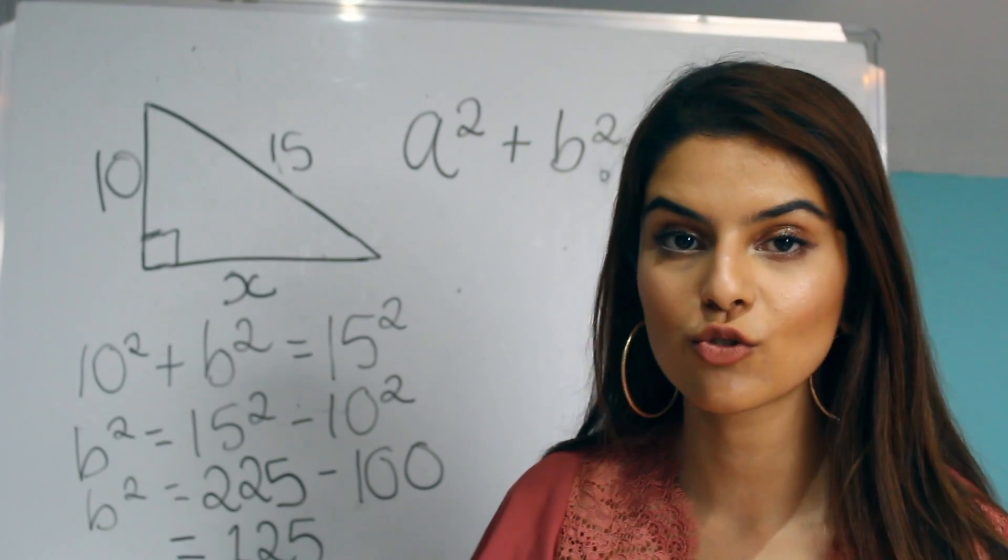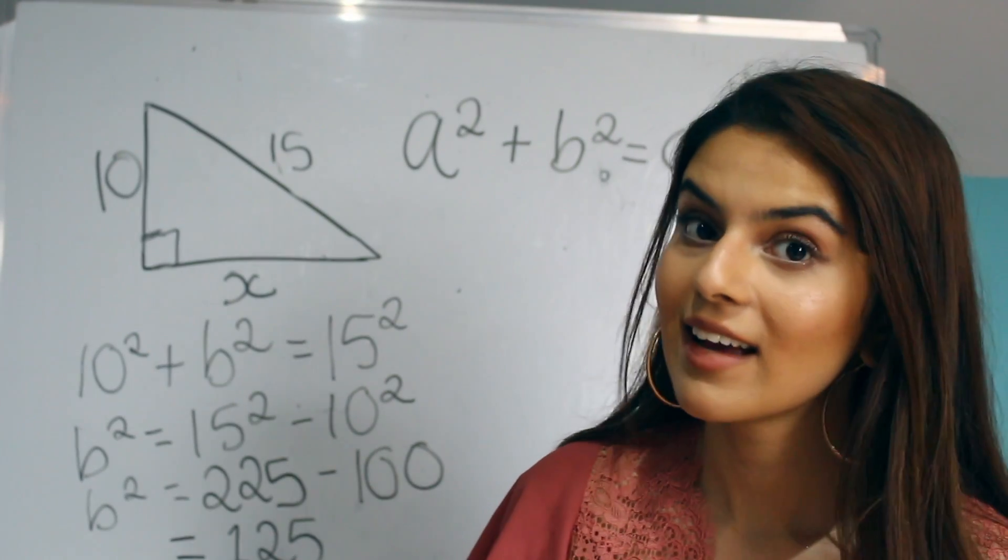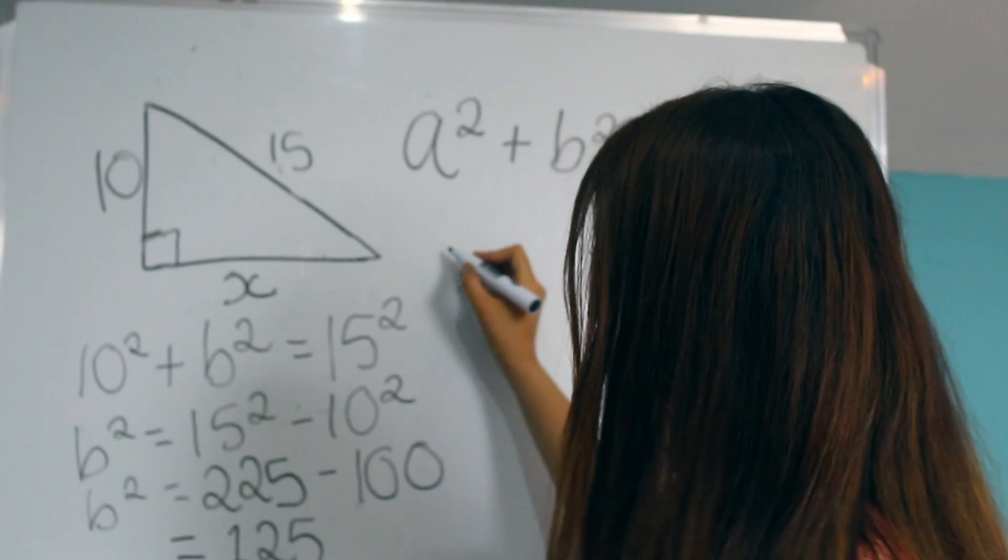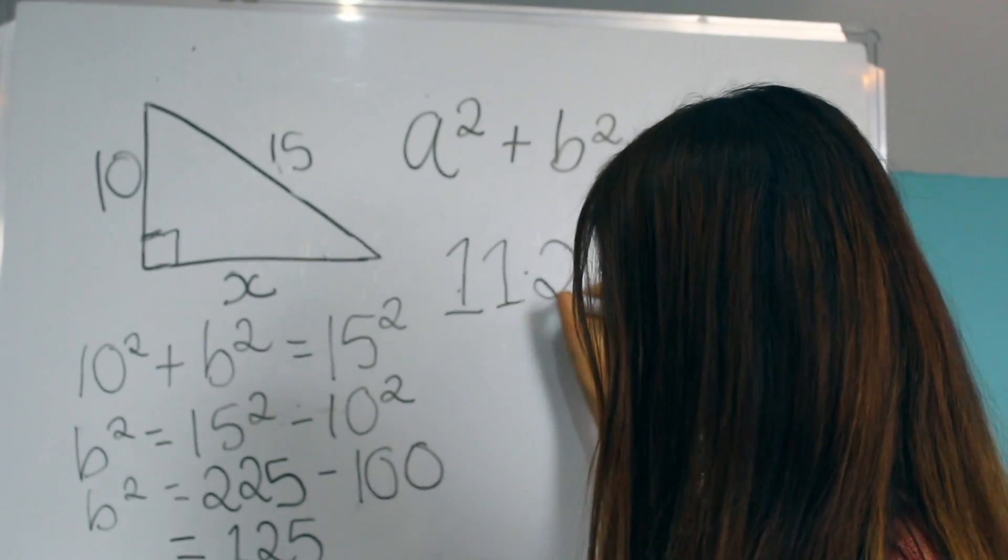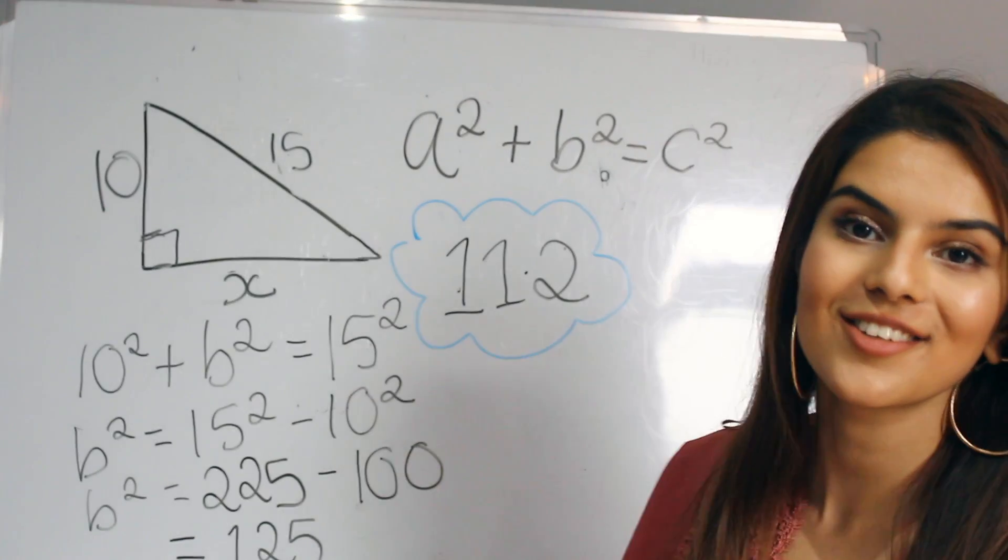And now if we just square root 125, we get 11.2. This would be our final answer.